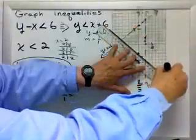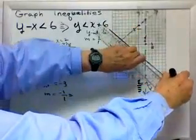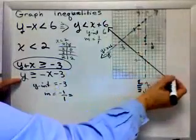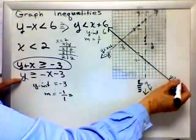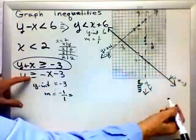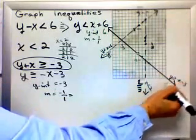And, again, because I've got three lines on the same graph, I'm going to put the equation on the line. Y greater than or equal to minus x minus 3. Now, on this one, if I'm shading greater than, where am I going to shade? Above or below? Above.